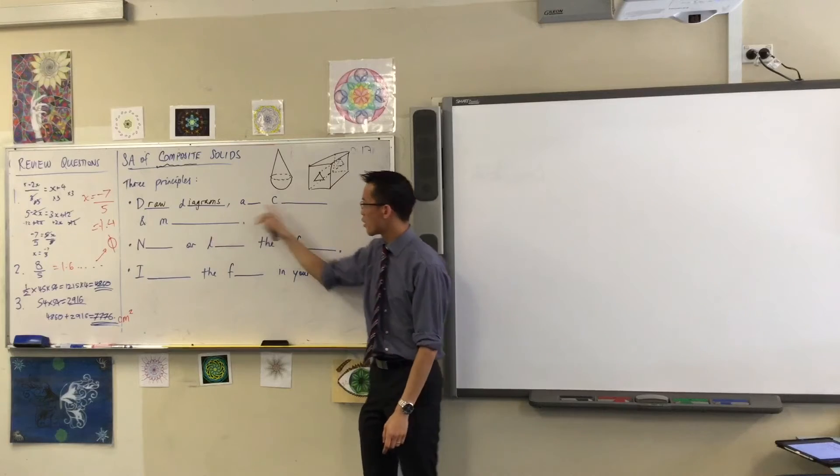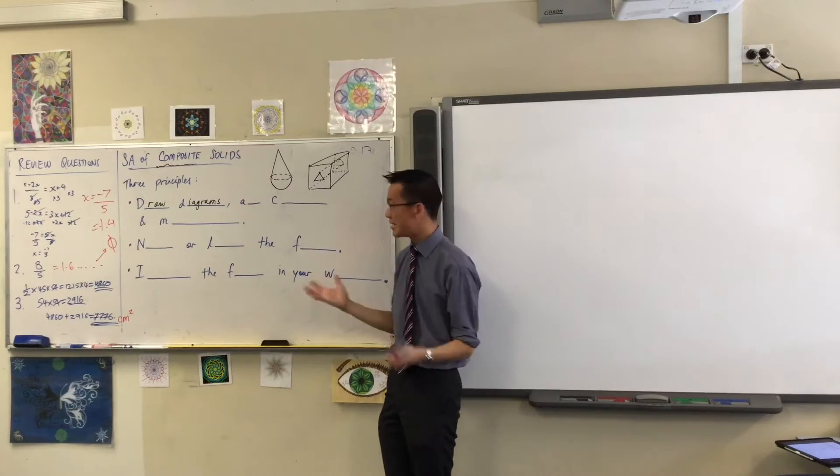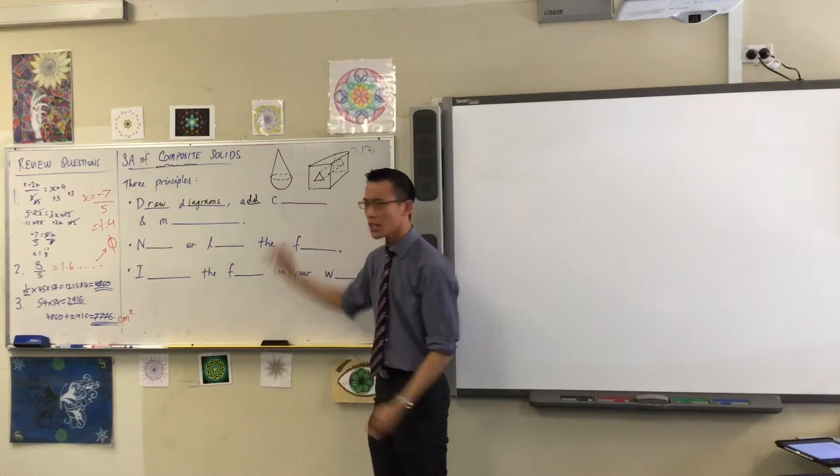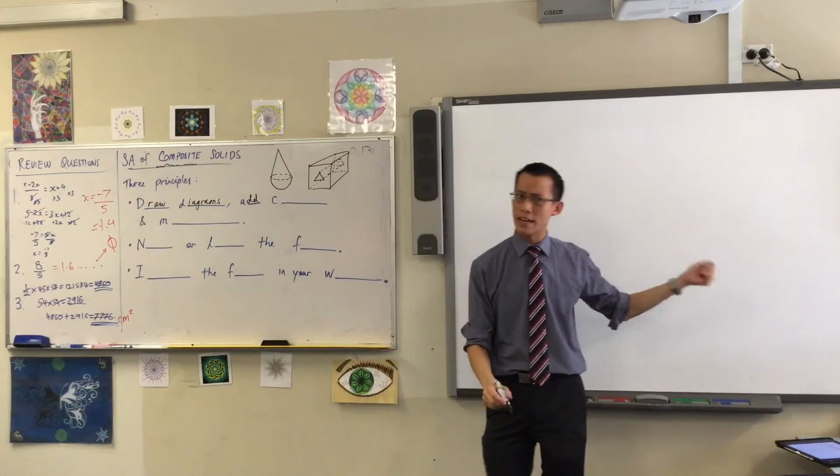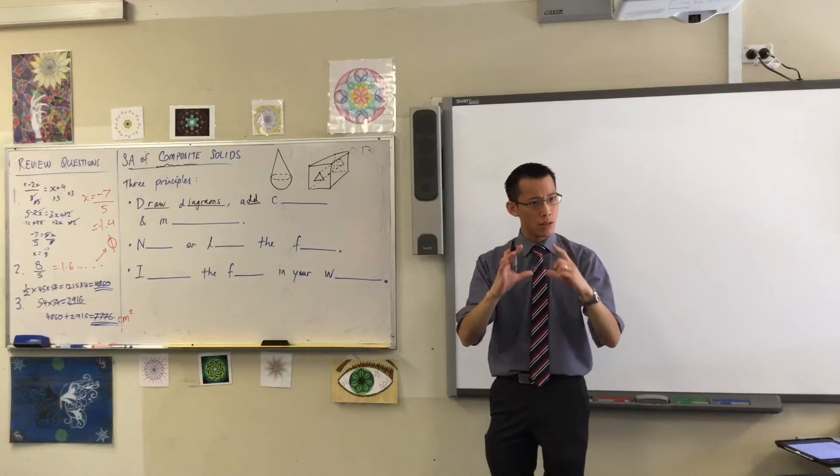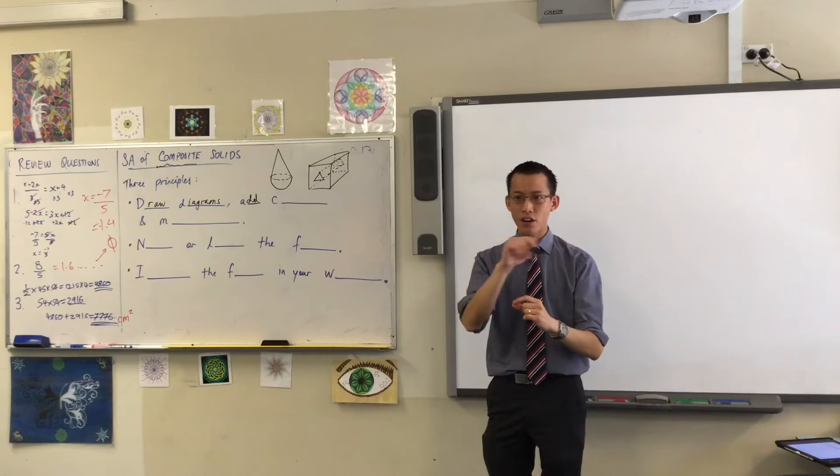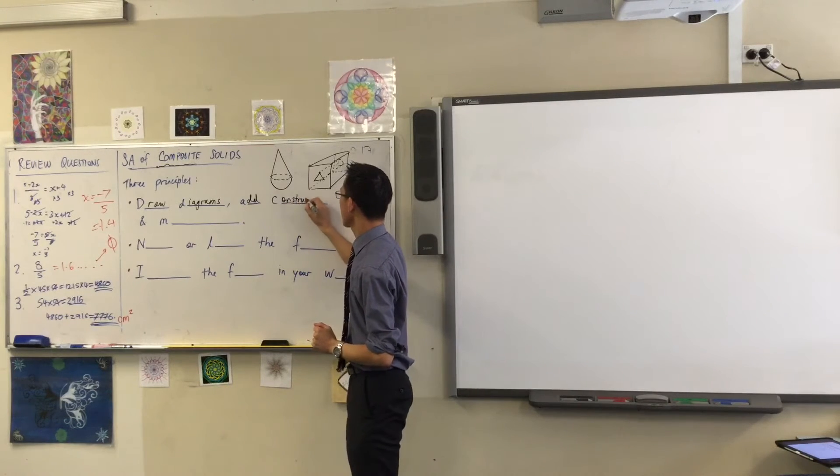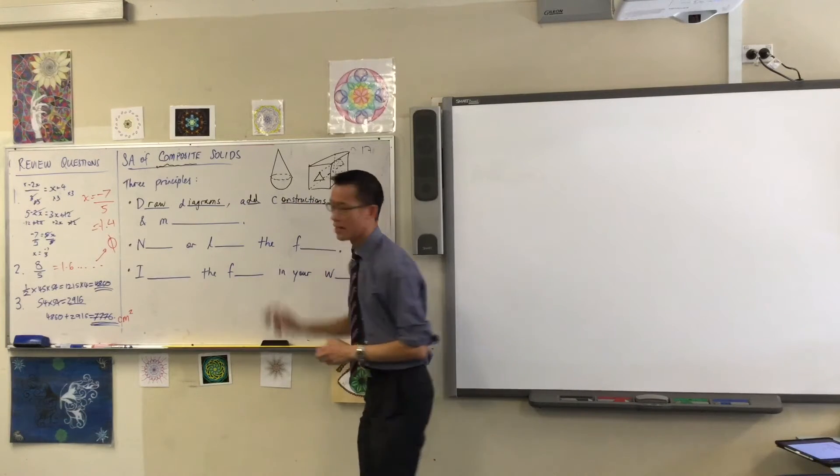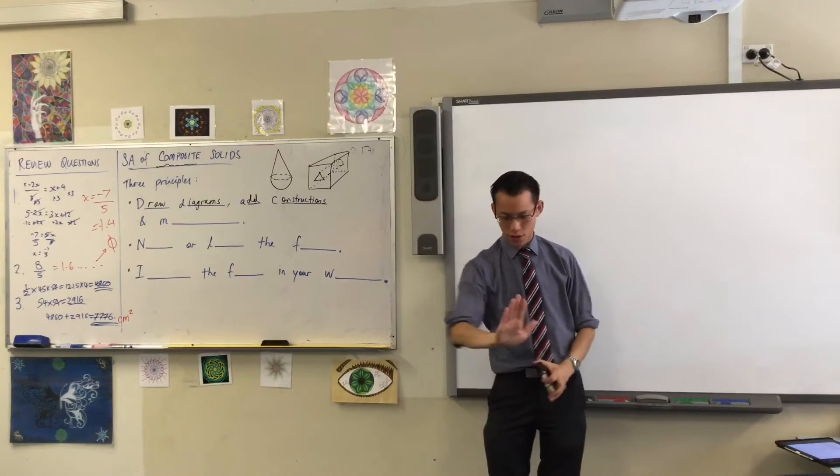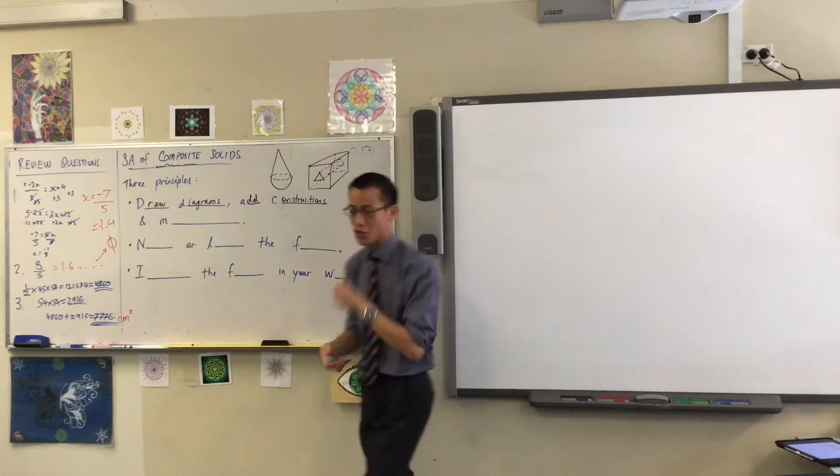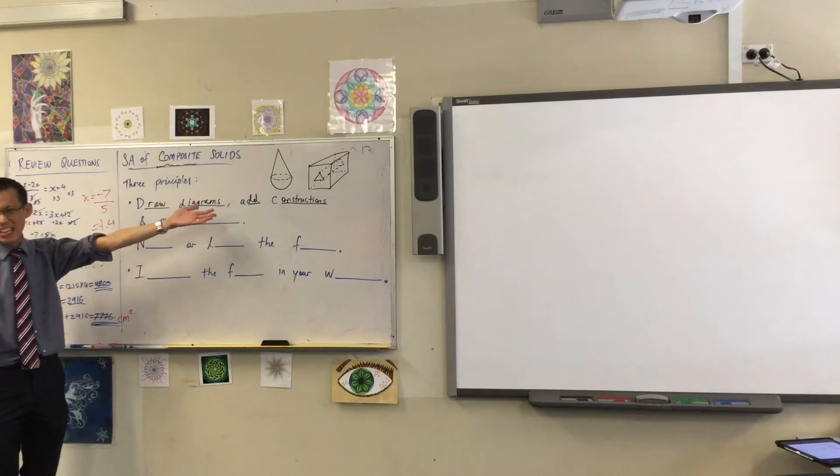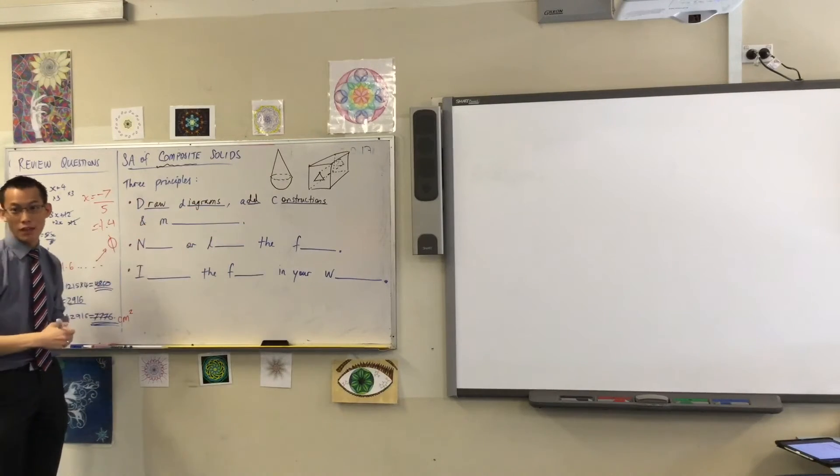So once you've drawn it, there are a few things we're going to include on there in addition to just the diagram, okay? I would encourage you to add, do you remember on that pyramid we were working out just now? Excuse me. To do the surface area, I added on extra lines. We call them constructions. Far more easy to add constructions when you've got a thing on a piece of paper, rather than in your head. And then when you have constructions, usually you need to know like lengths or angles or whatever it is. So we call them measurements.